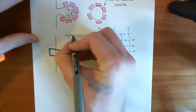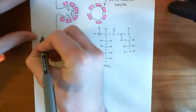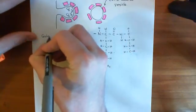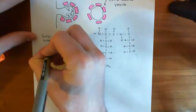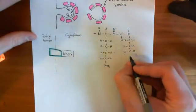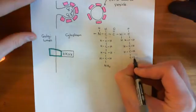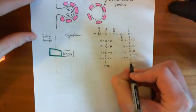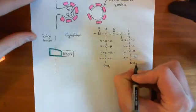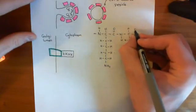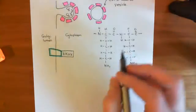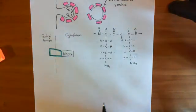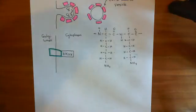This is the cytoplasm, and this is the Golgi lumen. If the KKXX sequence is facing the Golgi lumen, it's useless — it needs to be exposed on the cytoplasmic side. You need to have these two lysines neighbouring one another, and that will then be the signal for this protein to be removed and put into COP1-coated vesicles.